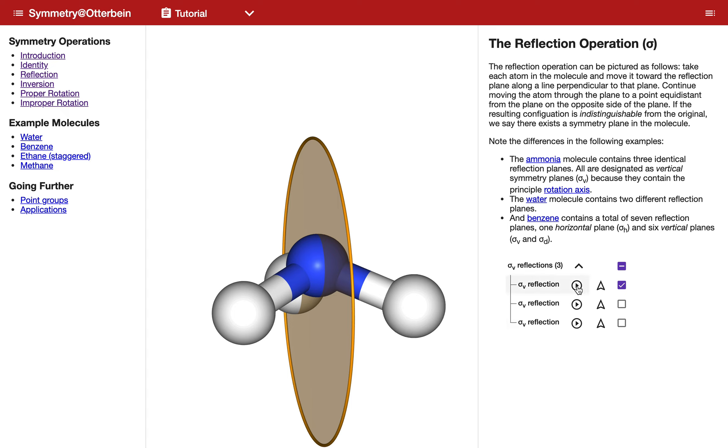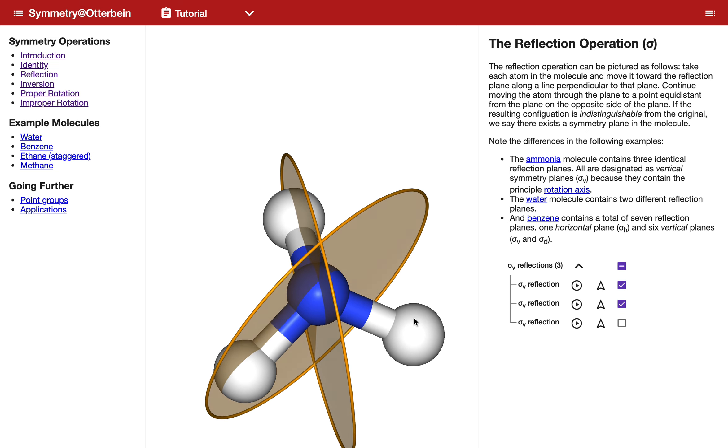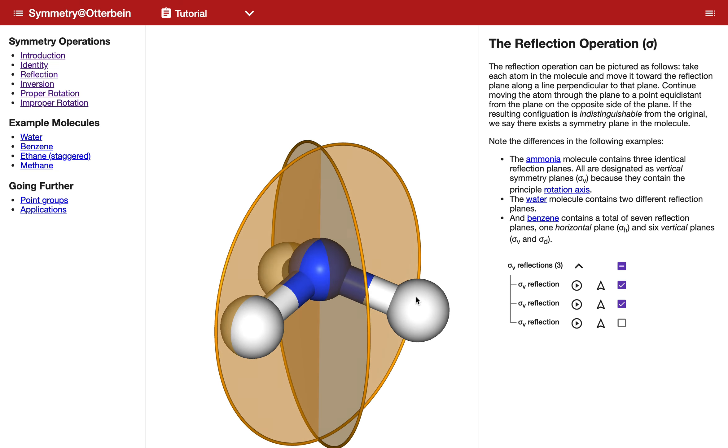For example, if I click on this little right arrow here next to the one that I've checked, I can see those two atoms exchanging one another as part of the operation of that reflection, and I can do that as many times as I wish.